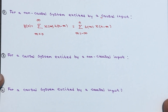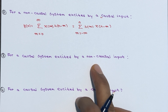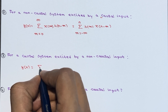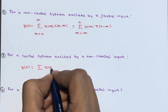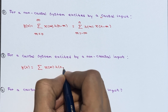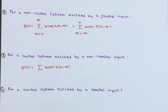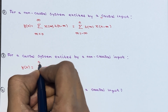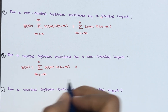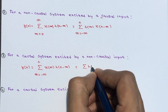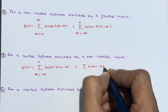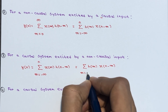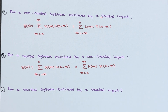For a causal system excited by a non-causal input, y(n) equals summation of x(m) times h(n minus m), where m ranges from minus infinity to n. Equivalently, it can be written as summation of h(m) times x(n minus m), where m ranges from 0 to infinity.